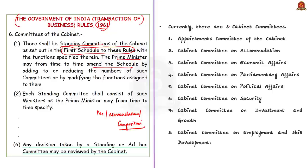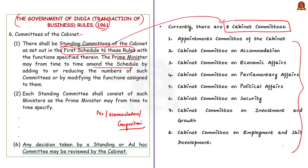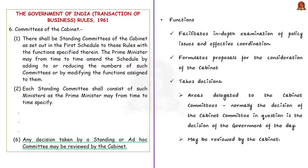At present, the schedule lists eight Cabinet Committees, and their functions are mentioned in the schedule. Generally, their function is to facilitate in-depth examination of policy issues and effective coordination. They formulate proposals for the consideration of the Cabinet and also take decisions. In all areas delegated to Cabinet Committees, the decision of the Cabinet Committee is normally the decision of the government of the day. However, as per the 1961 rules, any decision taken by a standing or ad-hoc Cabinet Committee may be reviewed by the Cabinet — it is up to the Prime Minister to decide if any issue should be reopened in the full Cabinet.